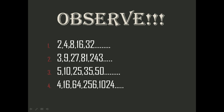In series one: 2 is multiplied by 2 to get 4, 4 is multiplied by 2 to get 8, 8 is multiplied by 2 to get 16, and 16 is multiplied by 2 to get 32. So the fixed common number multiplied each time is 2 — this series is properly arranged.